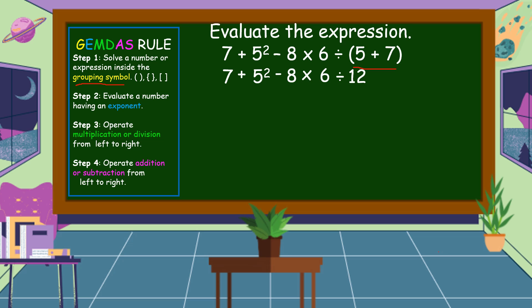What is our next step? We're going to evaluate the number having an exponent. So we're going to evaluate 5 squared. 5 squared means 5 times 5. Bring down first: 7 plus 5 times 5 is equal to 25, then bring down minus 8 times 6 divided by 12.